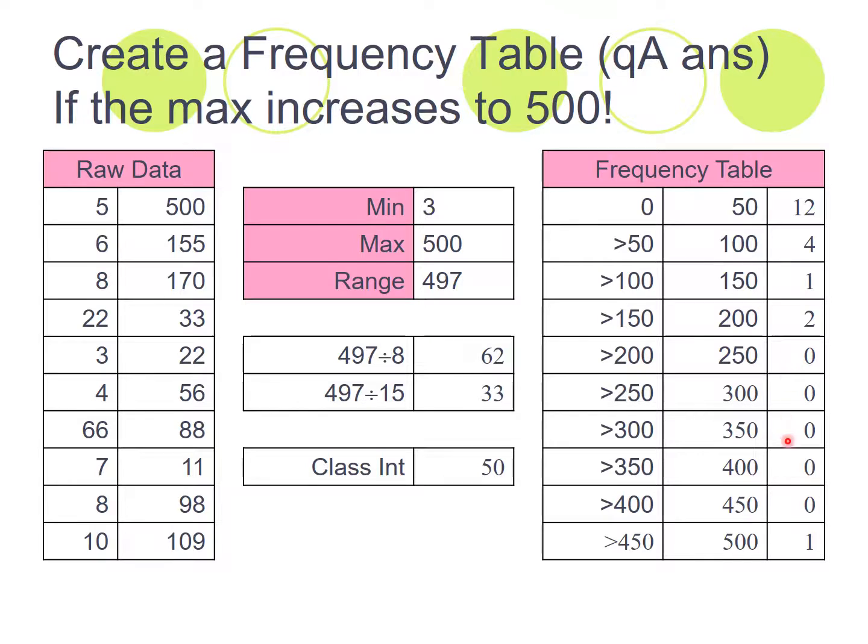And you can see we've got a big, huge gap here with loads of zeros and we have a single one out here. So it has quite a difference in your frequency table. Again, why divide by 8? Why divide by 15? We want it to end up with between 8 and 15 intervals across the way.